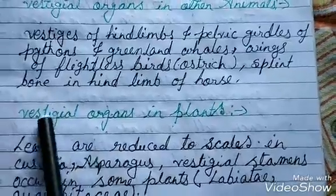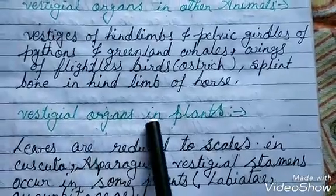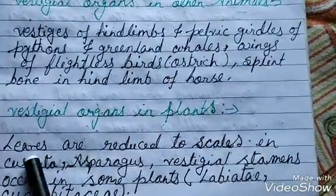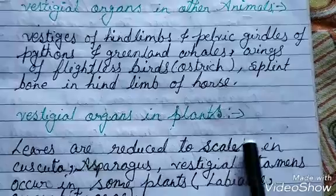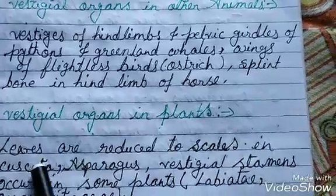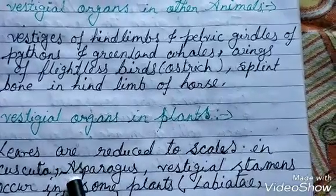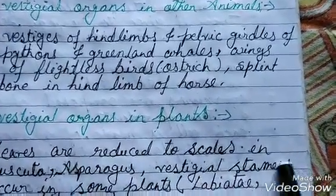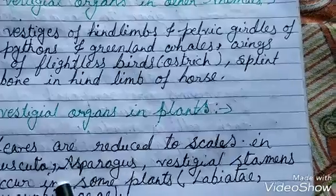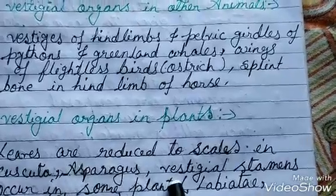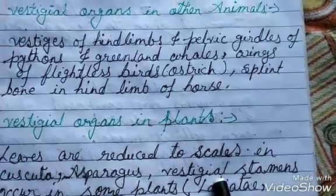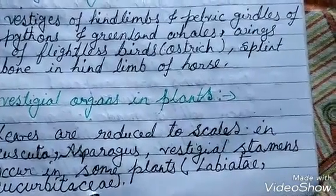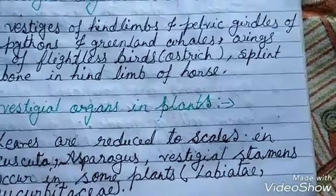Some examples of vestigial organs in plants: leaves are reduced to scales in Cuscuta and Asparagus, and vestigial stamens occur in some plants like Labiatae and Cucurbitaceae.